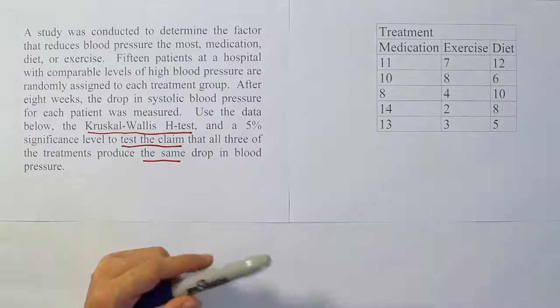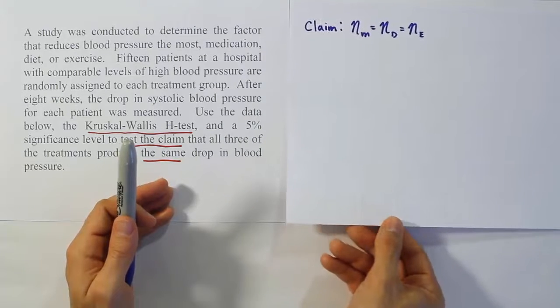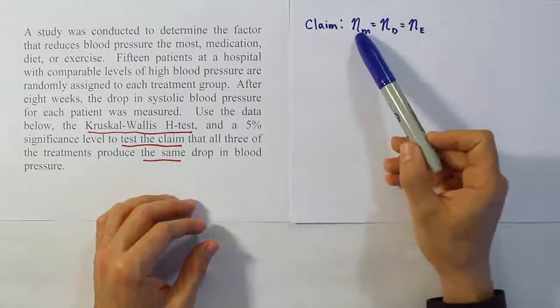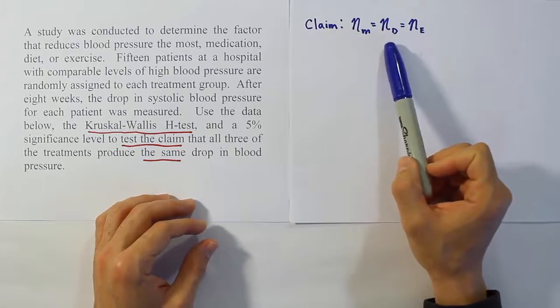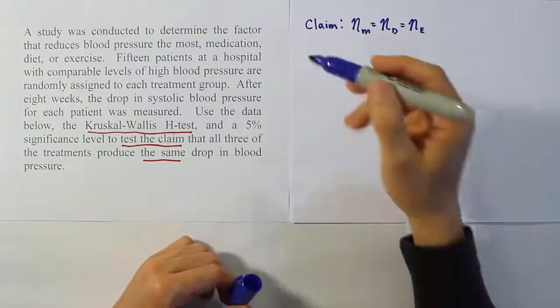The first step is to express the claim symbolically. I've done that for us already just to save a little bit of time. The claim is simply that the median for the med group is equal to the median for the diet group is equal to the median for the exercise group.